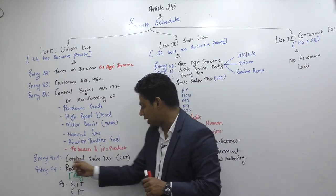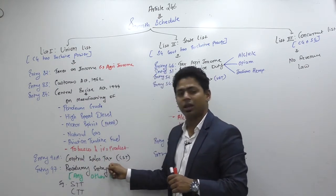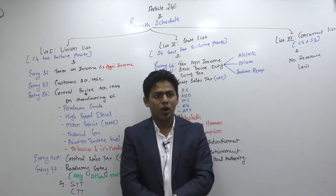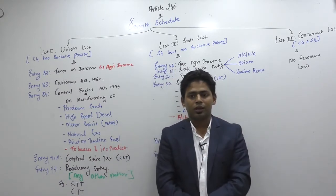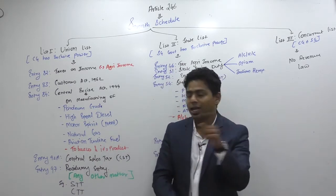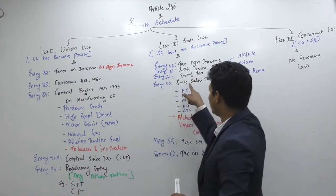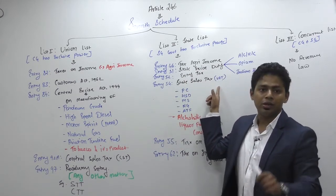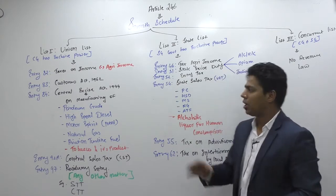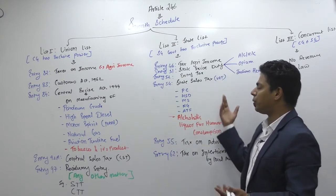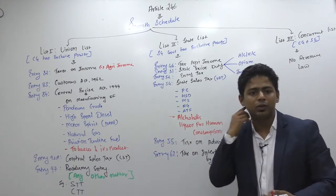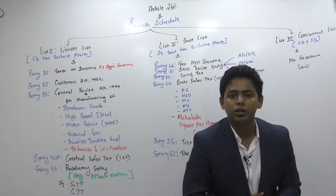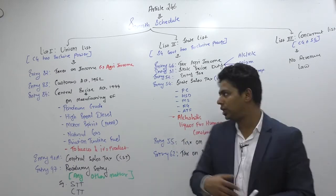We are having Central Sales Tax. That means sales tax exists at state level also. State level sales tax was known as VAT — Value Added Tax. We don't need to speak much about VAT because it is abolished — it has merged with GST. But still, even today, there are products covered under VAT law, so VAT is not 100% deleted.